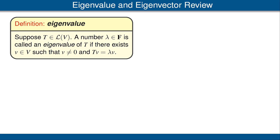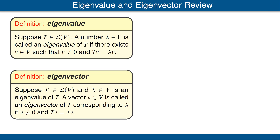Before getting to generalized eigenvectors, let's review our definitions concerning eigenvalues and eigenvectors. Suppose t is an operator on v. A number lambda is called an eigenvalue of t if there exists a nonzero vector v such that t of v is equal to lambda times v. An eigenvalue is a number and an eigenvector is a vector. Suppose we have an operator t on v and a scalar lambda in f that's an eigenvalue of t. A vector is called an eigenvector of t corresponding to lambda if that vector is not 0 and t of that vector is lambda times that vector.